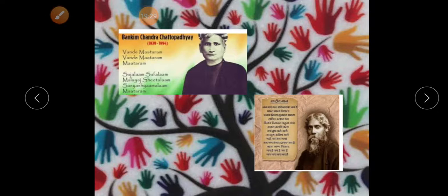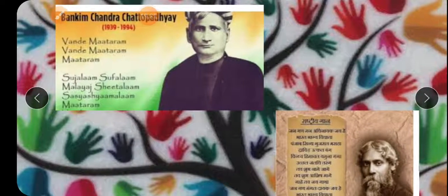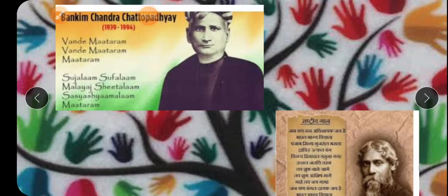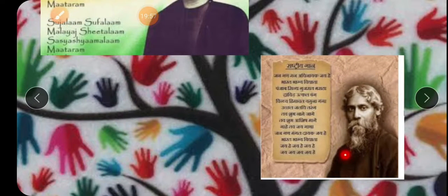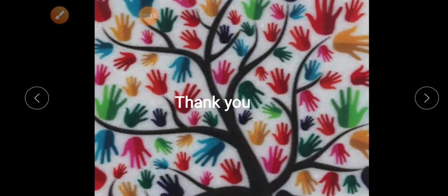Children, do you know who wrote Vande Mataram and Jana Gana Mana? Vande Mataram is our National Song and Jana Gana Mana is our National Anthem. The National Song was written by Bankim Chandra Chattopadhyay (Chatterjee) and the National Anthem was written by Rabindranath Tagore — both of them belong to Kolkata. Kolkata is famous for these two great persons. Here the session is over, thank you children.